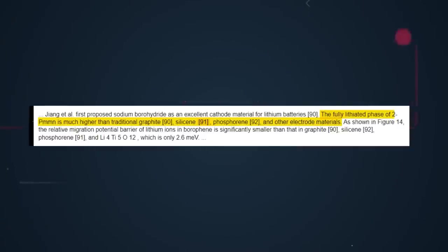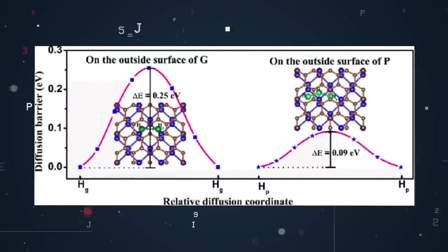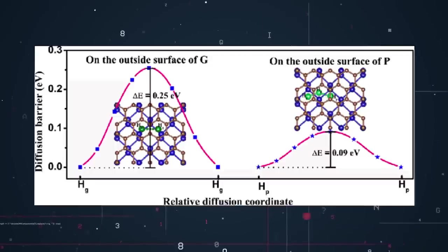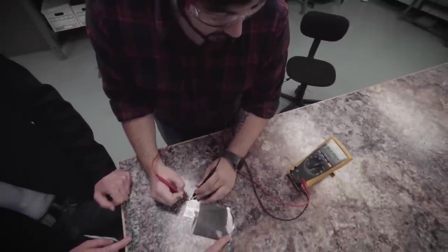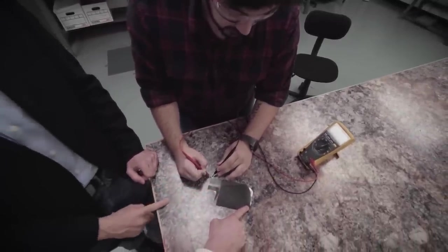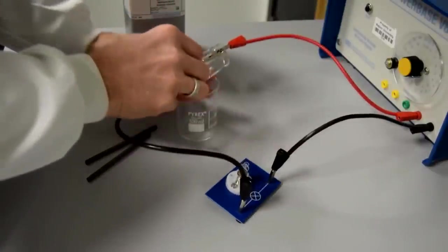The relative migration potential barrier of lithium ions in borophene is significantly smaller than that in graphite, silicene, and phosphorene. So, basically, because borophene has high ionic conductivity and excellent electronic conductivity, it has a relatively excellent performance in the whole charging and discharging process.